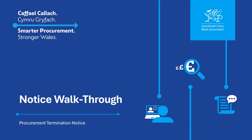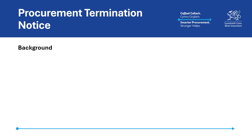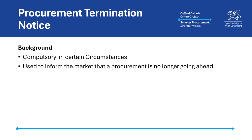In this video, we will be taking you through the procurement termination notice, giving some background on when and how the notice is to be used, and what information needs to be included when publishing one. This notice is required in circumstances where a contracting authority has decided not to proceed with the procurement, and informs the market that the procurement is no longer going ahead.